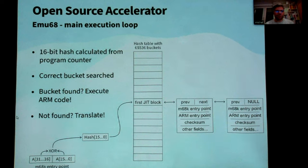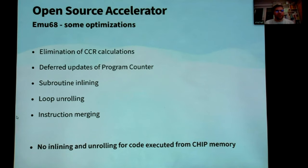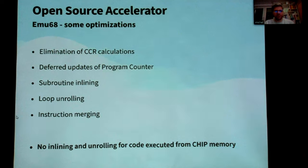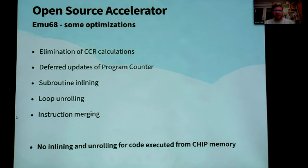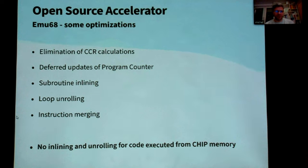The translation process is relatively fast because we don't perform awfully time-intensive optimizations like those known from other just-in-time compilers. The optimizations we do have a major impact on performance but are not very time-consuming. The most important part is the elimination of condition code calculations. Next is the deferred update of the program counter register, which doesn't have to be updated for every single opcode. We also have subroutine inlining, loop unrolling, and instruction merging.